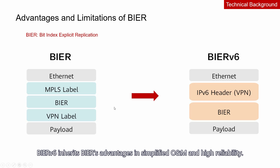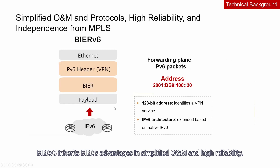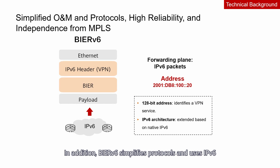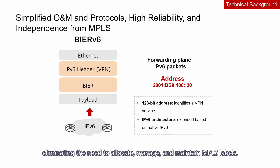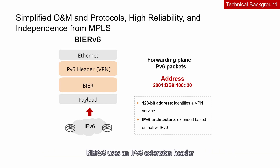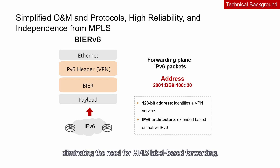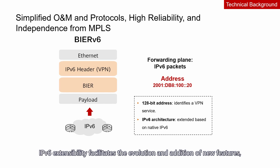BIERv6 inherits BIER's advantages in simplified operation and maintenance and high reliability. In addition, BIERv6 simplifies protocols and uses IPv6 addresses to distinguish multicast VPN services from GTM services, eliminating the need to allocate, manage, and maintain MPLS labels. BIERv6 uses an IPv6 extension header to carry BIER forwarding instructions, eliminating the need for MPLS label-based forwarding. IPv6 extensibility facilitates the evolution and addition of new features such as multicast network slicing and in-situ flow information telemetry.